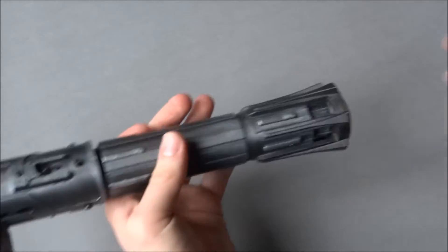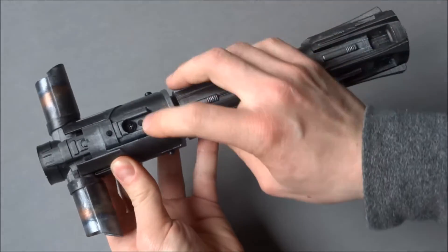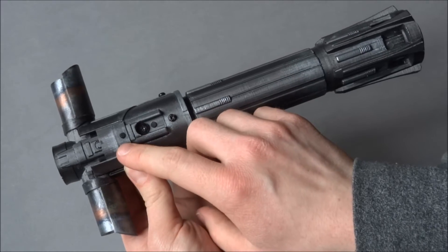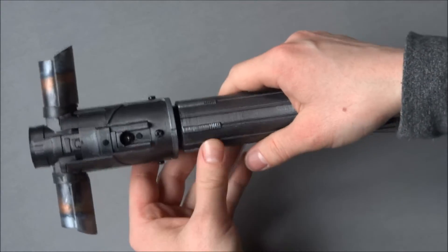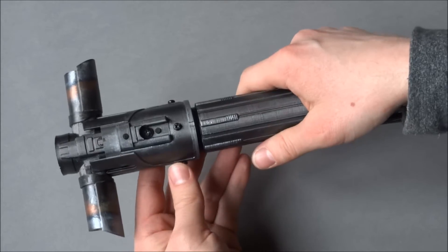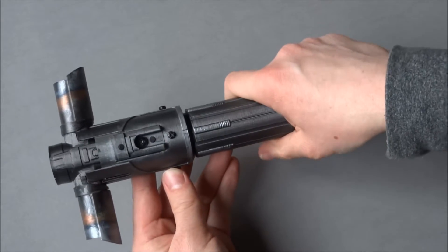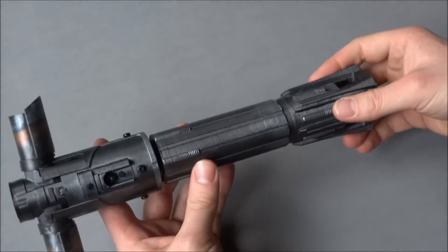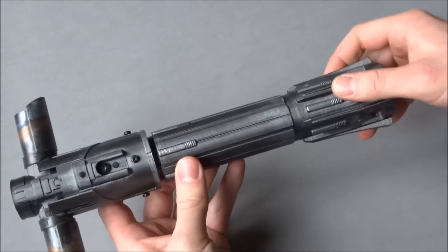Screw it back on and we have the power on button here and the auxiliary button here because we need two switches for the crystal shard version 3.0 by Plectolabs which is installed here.